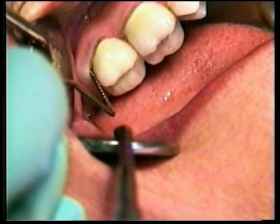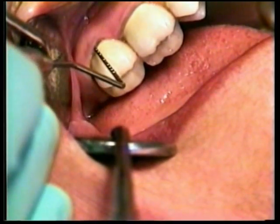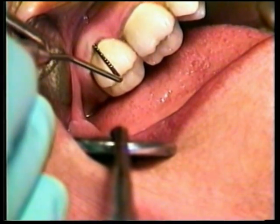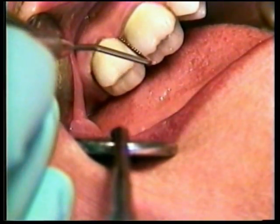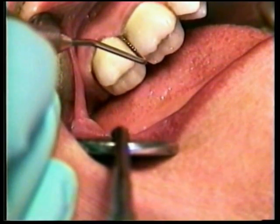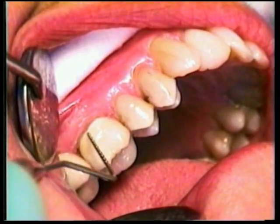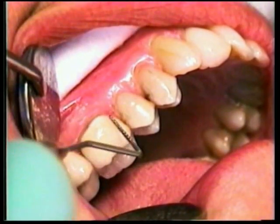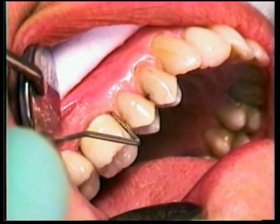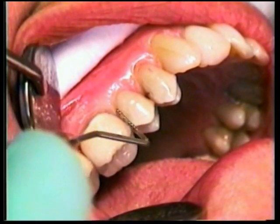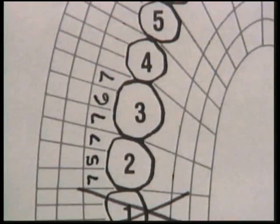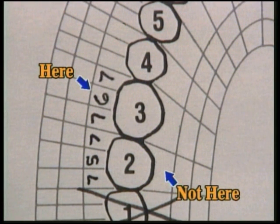The doctor calls out the three buccal or labial measurements for each tooth and then pauses for the assistant to write down the measurements. The doctor would then go to the next tooth and call the three buccal or labial numbers. We do not proceed to the lingual of tooth number two.